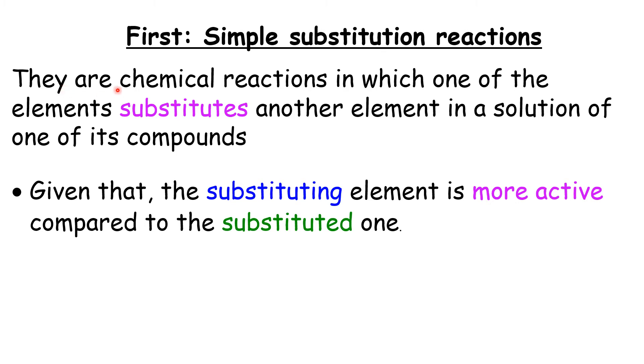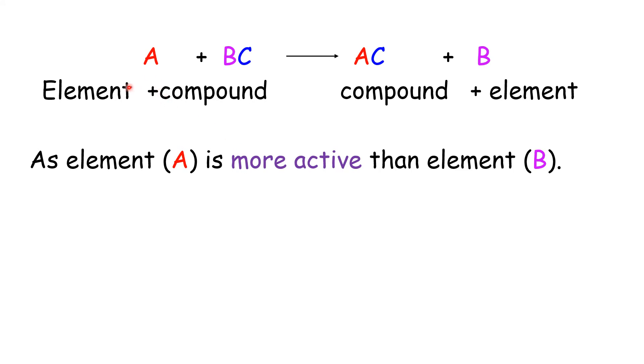First, simple substitution reactions. They are chemical reactions in which one of the elements substitutes another element in a solution of one of its compounds, given that the substituting element is more active compared to the substituted one. Here is the diagram: element A with compound BC. B will be replaced by A, and B is the substituted element. Element A is more active than element B.